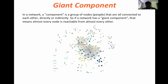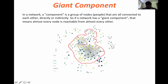The giant component is a group of nodes where every node is reachable from every other node, and it has the maximum possible number of nodes. It's the biggest sub-graph in your network — that's called the giant component. In this picture, you can see this one is considered as the giant component.